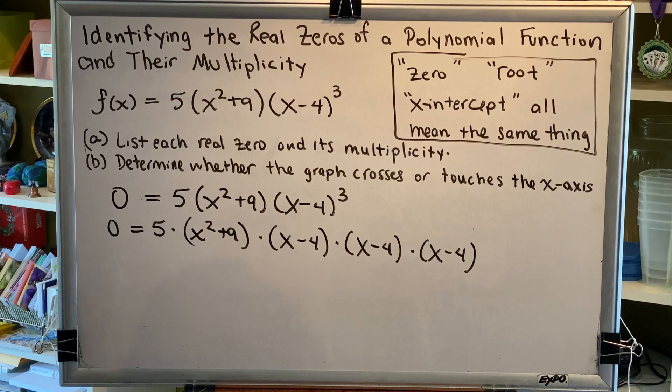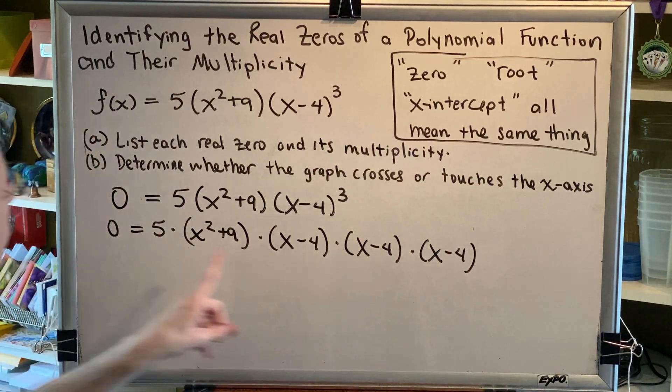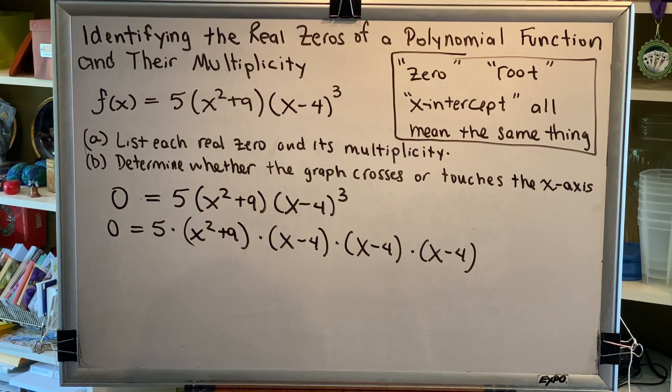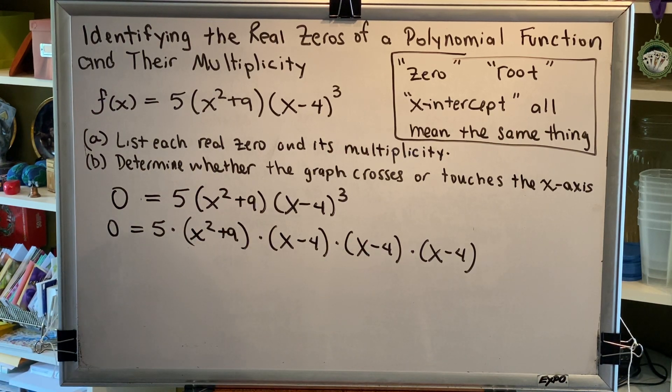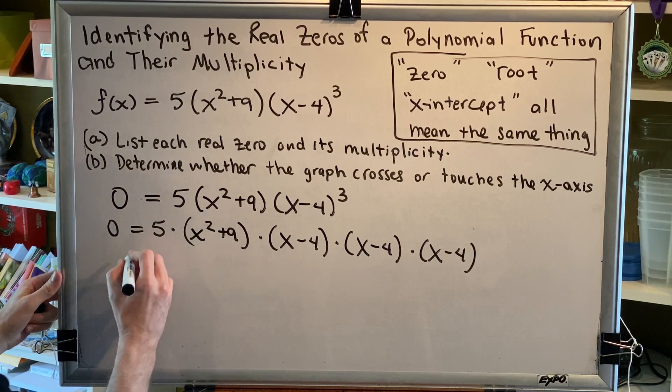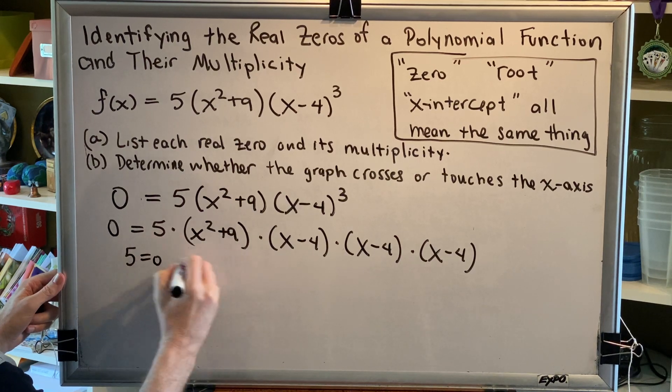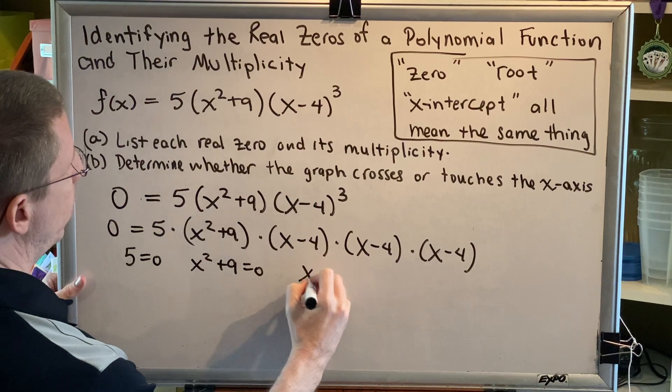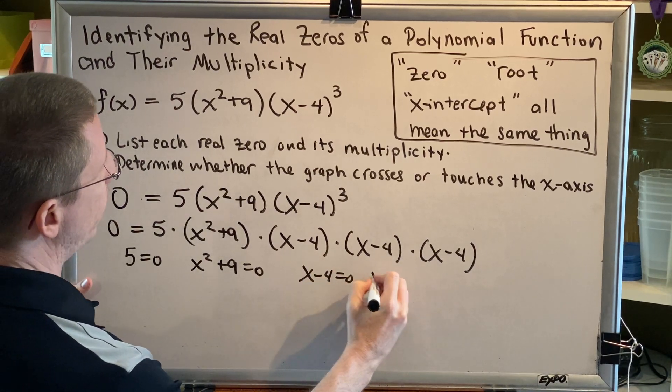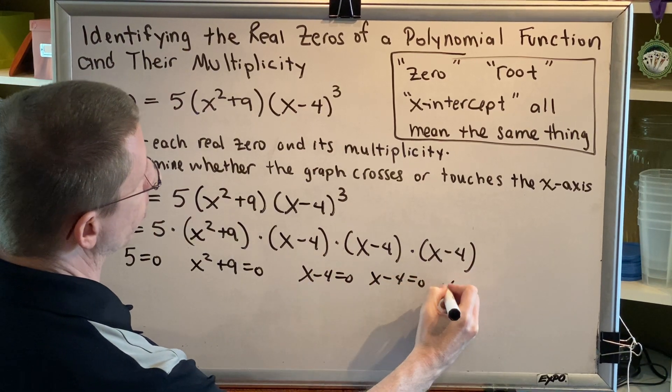By the zero product property, when two or more things being multiplied give a product of zero, then at least one of those things has to be zero. So to solve, we set each thing equal to zero. We set 5 equal to zero, x squared plus 9 equal to zero, and each one of the x minus 4s equal to zero.